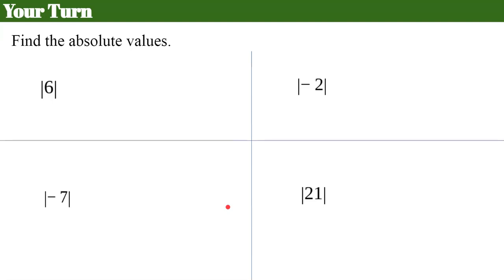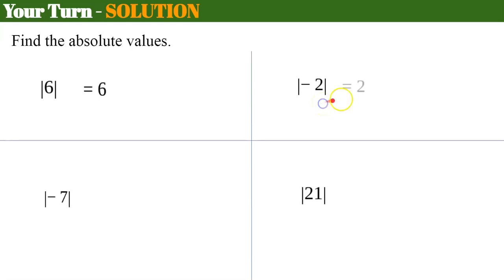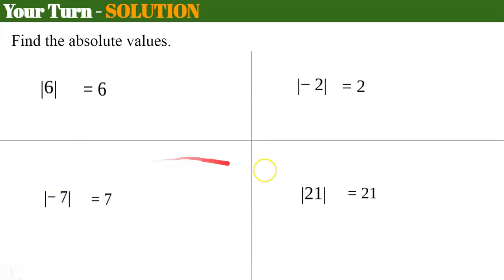Your turn. Pause the video here, find the absolute values of these four problems, and come back when you're ready. Welcome back. The absolute value of 6 is 6. The absolute value of negative 2 is positive 2. The absolute value of negative 7 is positive 7. And the absolute value of 21 is 21. Whatever is inside the absolute value symbol, the positive version is what it equals — whether the number inside is negative or positive, the absolute value will always be its positive.